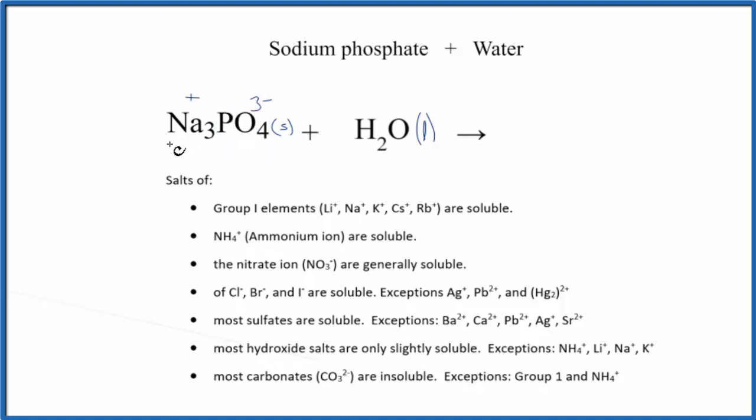So once we know these charges, now we can split it apart into its ions. We have sodium, which is the Na plus ion, and write AQ. It's dissolved in water. And we have three of them, three separate sodium ions. So we put that coefficient there.